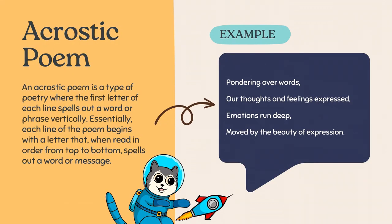Here's one that you've probably been involved with at some point in school. A lot of teachers, when they're trying to introduce their students to poems, introduce them to acrostic poems. Quite frequently, it will be an acrostic made with your name — you take the first letters of your first or last name, and that becomes the first letter of each line of the poem. In this example, if you read the first letters of each line going down, they spell out the word POEM: P for 'Pondering over words,' O for 'Our thoughts and feelings expressed,' E for 'Emotions run deep,' M for 'Moved by the beauty of expression.'